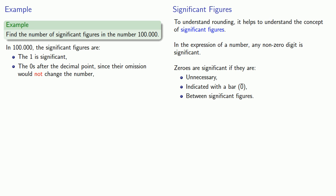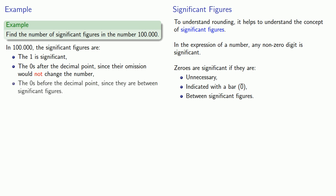And so the zeros after the decimal are significant because their omission would not change the value of the number. Because the 1 is significant and those zeros are significant, the zeros before the decimal are also significant since they are between 1 and a significant figure. That means this number has six significant figures.